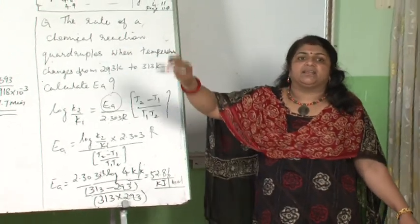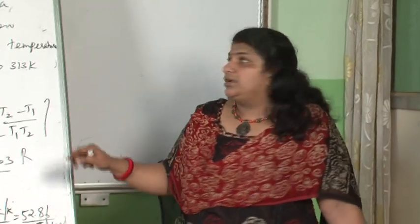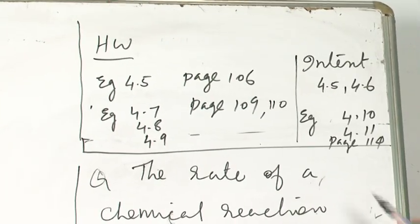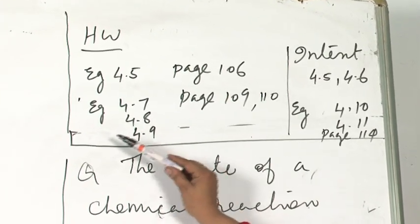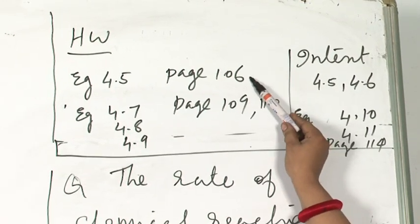It will be triples, doubles with every 10 degree rise in temperature. Like these general questions, many are there in the textbook. You need to do NCERT textbook back exercises and index questions as well as examples. Example 4.5, page number 106.